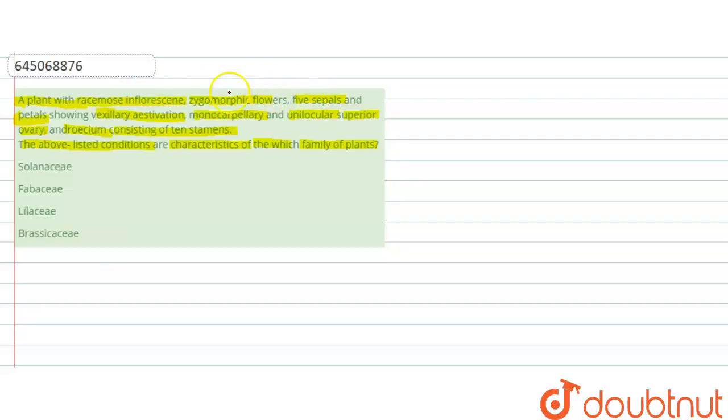First we have Solanaceae. If we talk about the Solanaceae family, Solanaceae has always the cymose type of inflorescence. So this will be incorrect here because in the question the racemose inflorescence is given.